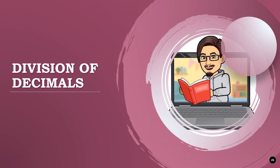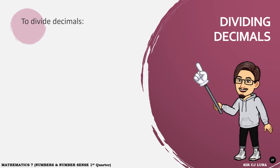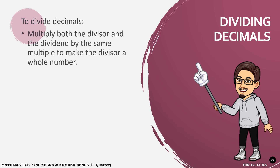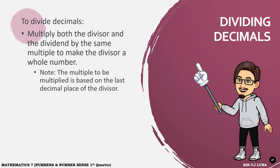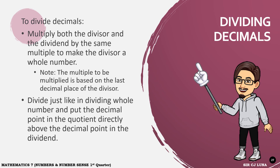The last part of our lesson is about the division of decimals. To divide decimals, multiply both the divisor and the dividend by the same multiple to make the divisor a whole number. The multiple to be multiplied is based on the last decimal place of the divisor. Lastly, divide just like in dividing whole numbers, and put the decimal point in the quotient directly above the decimal point in the dividend.